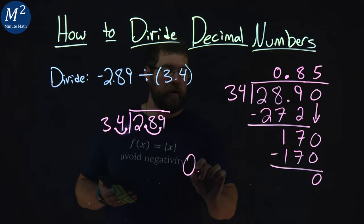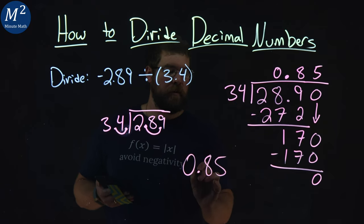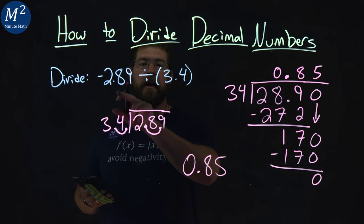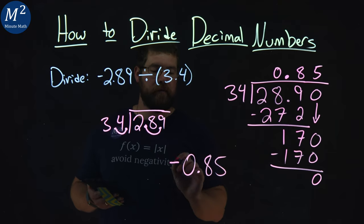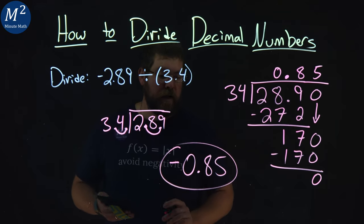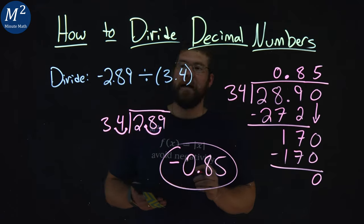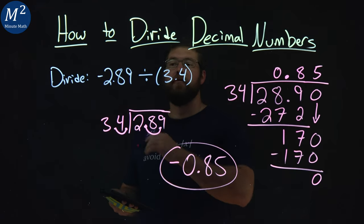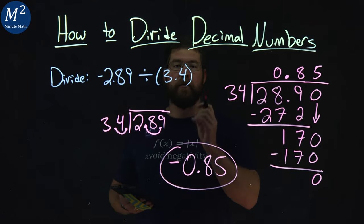And so we have 0.85. But remember it has to be negative. Negative divided by positive is negative. And there we have it. Negative 0.85 is the answer to our question, which was negative 2.89 divided by 3.4.